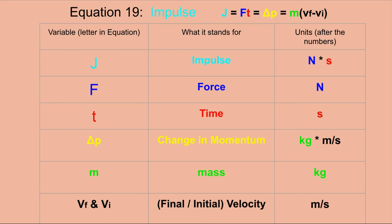Moving on to equation 19 — impulse. This equation has many parts equal to each other. The variable for impulse is j, and the unit is newton-seconds. This is because impulse is force applied over time: F is in newtons, t is in seconds, and multiplying their units gives newton-seconds.